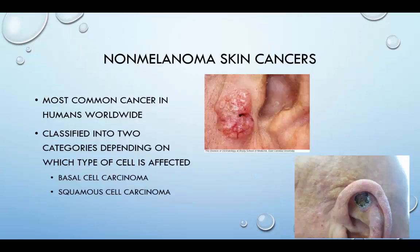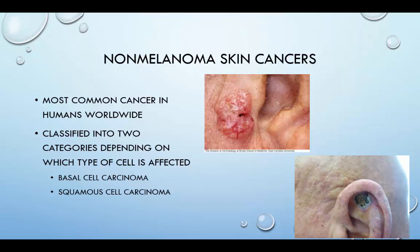Non-melanoma skin cancers are the most common cancer in humans worldwide. They are classified into two categories depending on which type of cell is affected: basal cell carcinoma or squamous cell carcinoma. Both arise from keratinocytes and rarely spread elsewhere on the body. Due to the rising incidence of this largely preventable form of cancer, the NCAA issued a sports medicine guideline in 2012 to address safety and prevention concerns. Melanoma is a skin cancer arising from melanocytes found in the stratum basale, eye, inner ear, meninges, heart, and even bone. The most common types are superficial spreading melanoma and nodular melanoma. Individuals most susceptible include those who are fair-skinned with blue eyes, sunburn easily, have had multiple sunburns at an early age, or have a family history of skin cancer. Melanoma kills young adults more often than any other cancer.